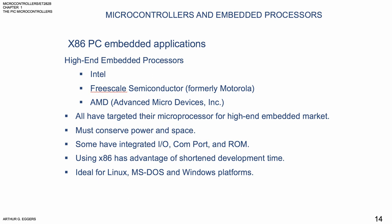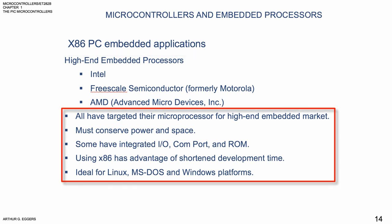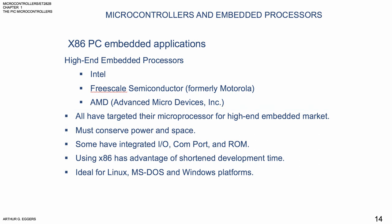High-end systems from Intel, Freescale Semiconductor, and Advanced Micro Devices — AMD — have all targeted their microprocessors for high-end embedded markets. They must conserve power and space for them to be integrated with an I/O, a COM port, and ROM. Using the x86 has the advantage of a shortened development time and is ideal for many applications like the MS-DOS and Windows platform.